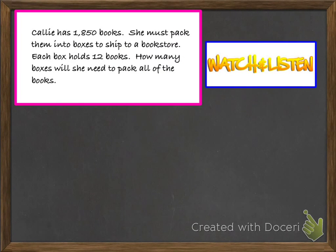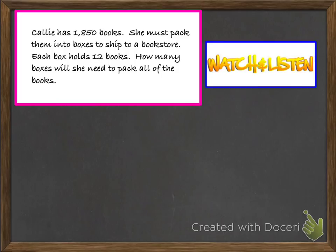Let's go through our last example. It reads: Callie has 1,850 books. She must pack them into boxes to ship to a bookstore. Each box holds 12 books. How many boxes will she need to pack all of the books? When you read word problems think about it like this — imagine having a bunch of books and wanting to put them into boxes to figure out how many you'll need. You're wanting to divide them up, break the books into smaller piles to ship them out. So we set up our division problem: underneath the box is our dividend, 1,850 — that's the total number of books — and we're dividing by 12 because each box holds 12 books.